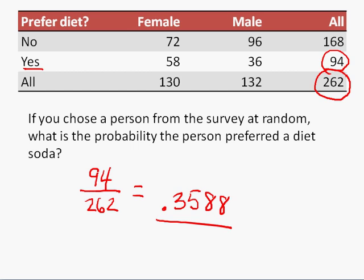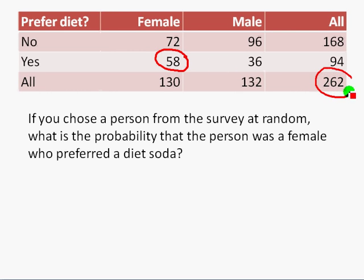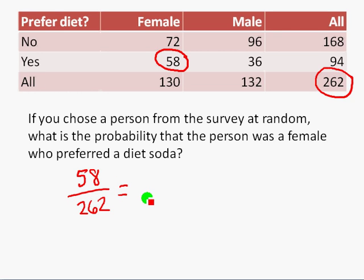Let's look at one more example. If we choose a person at random from the survey, what's the probability that person was a female who preferred diet soda? We're looking at two things — females who preferred diet sodas — so we look at the female row and the yes column. That was 58 people who were females preferring diet sodas out of 262 survey respondents, giving a probability of 58 out of 262, or as a decimal .2214.